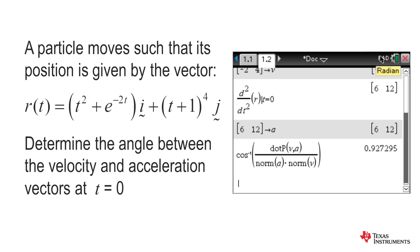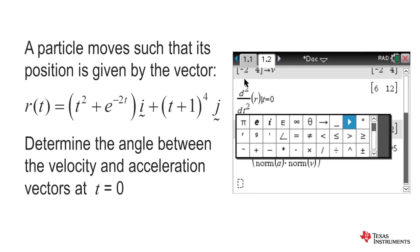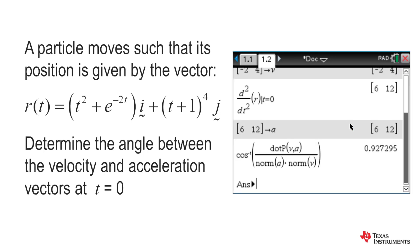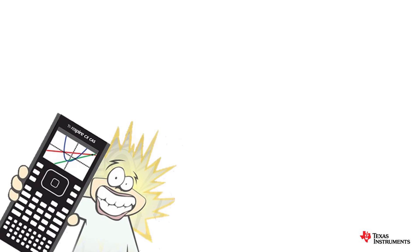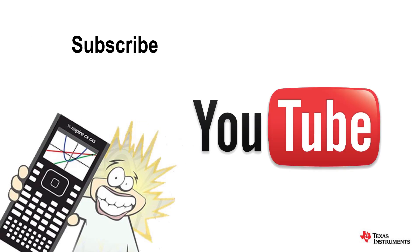I could change my calculator display to degrees, or alternatively, I can use convert to decimal degrees, and it is 53.13 degrees to 2 decimal places. See ya!